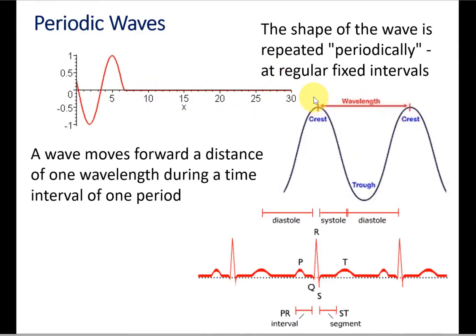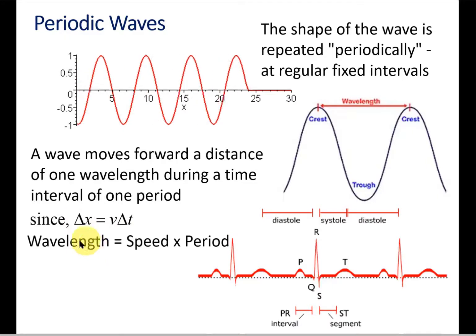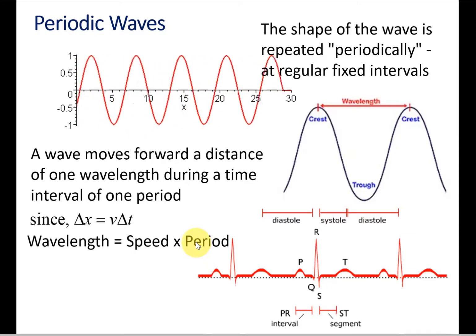We can use our kinematic equation. Displacement is velocity times time, right? So we can replace displacement by the wavelength and time by the period. This gives us an equation: wavelength equals speed times period. We use lambda λ to denote wavelength and uppercase T for the period.